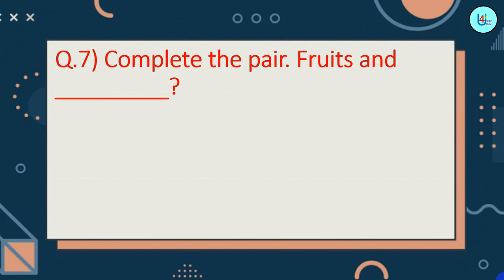Question number 7. Complete the pair. Fruits and dash. Diye gaye option mein se fruits ke saath kaun sa shabd joda banayega? Food, milk, vegetables.